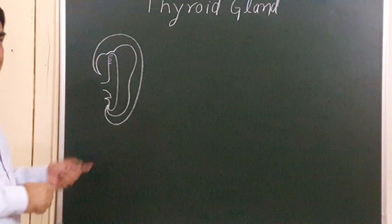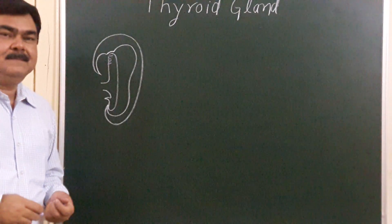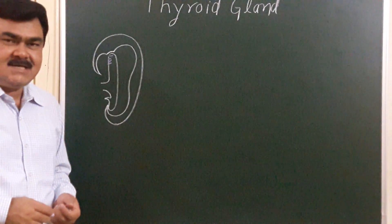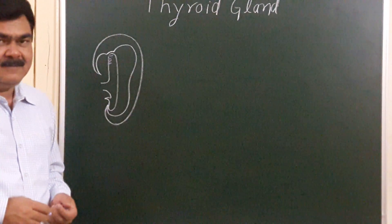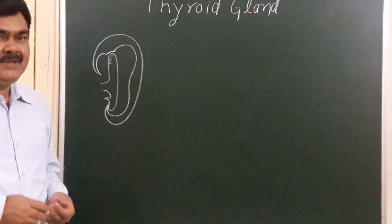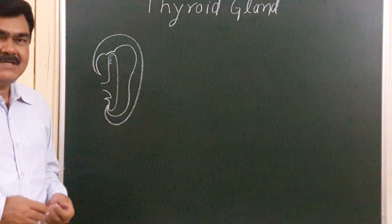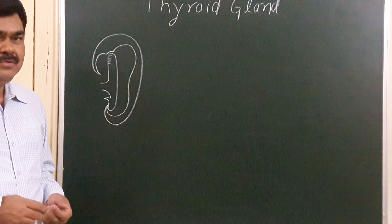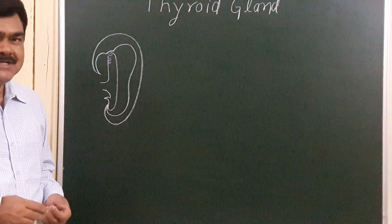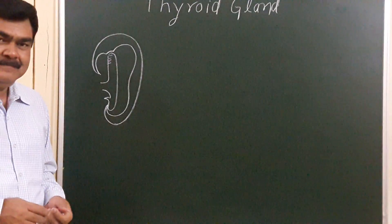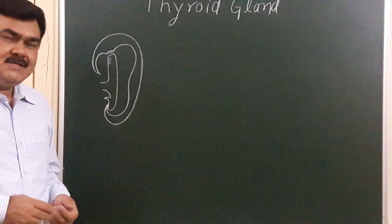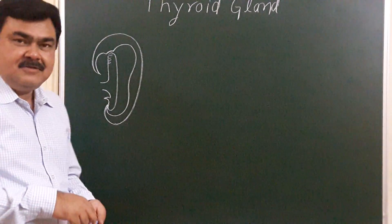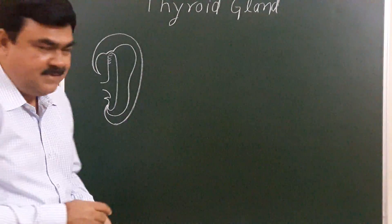These pharyngeal arches are initially 6 in number: 1st, 2nd, 3rd, 4th, 5th, and 6th. Just after formation, the 5th arch becomes disappears.